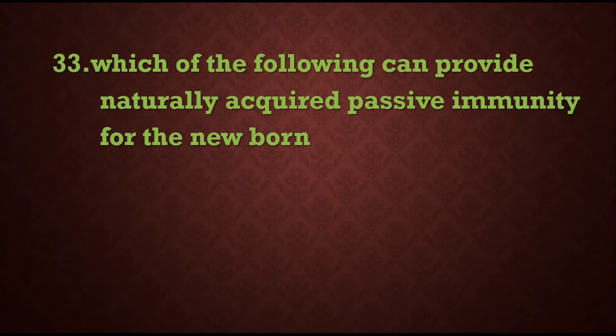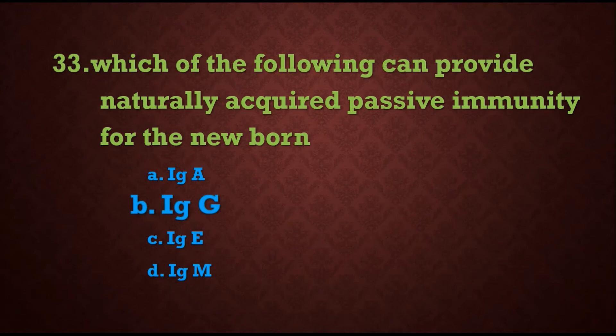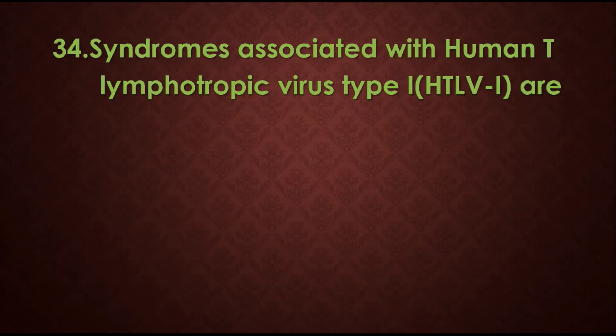Question 33: Which of the following can provide naturally acquired passive immunity for the newborn baby? Options are: A) IgA, B) IgG, C) IgE, D) IgM. The answer is B) IgG. For an infant, IgA can also apply since the mother gives IgA through feeding, but since the question asks specifically about the newborn, the answer is IgG.